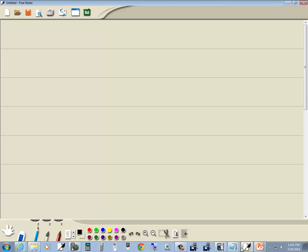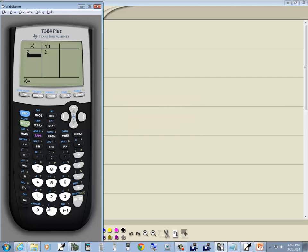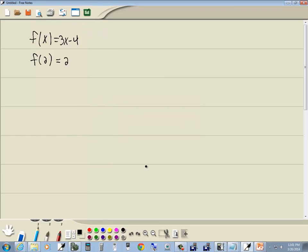Let me actually write this down. f of x is equal to 3x minus 4, and we just said that f of 2 is equal to 2 via the calculator.